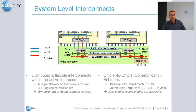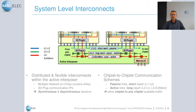The three interconnects from the chiplet are extended through the active interposer as distributed, very flexible interconnects. They integrate multiple networks-on-chip composed of routers and links with pipelining, buffering, and retiming for clock domain crossing. We integrate 3D plug communication IPs to make vertical communication between the chiplet and the active interposer, in both synchronous and asynchronous versions to study different performance trade-offs. For chiplet-to-chiplet communication we have passive links for direct chip-to-chip without routing, and active links for long-reach communication between L2/L3 and L3 to external memory, allowing scalable any-to-any chiplet traffic.